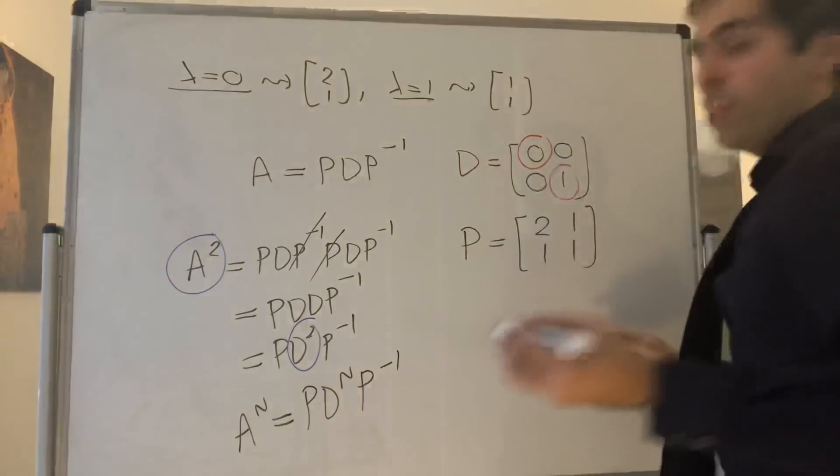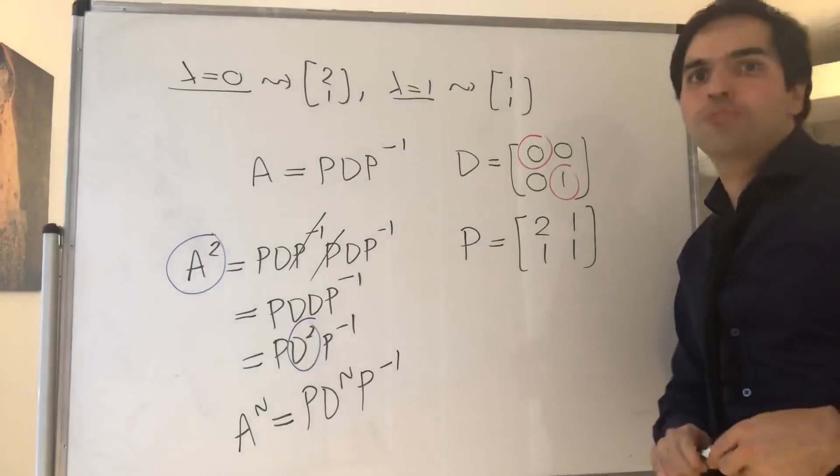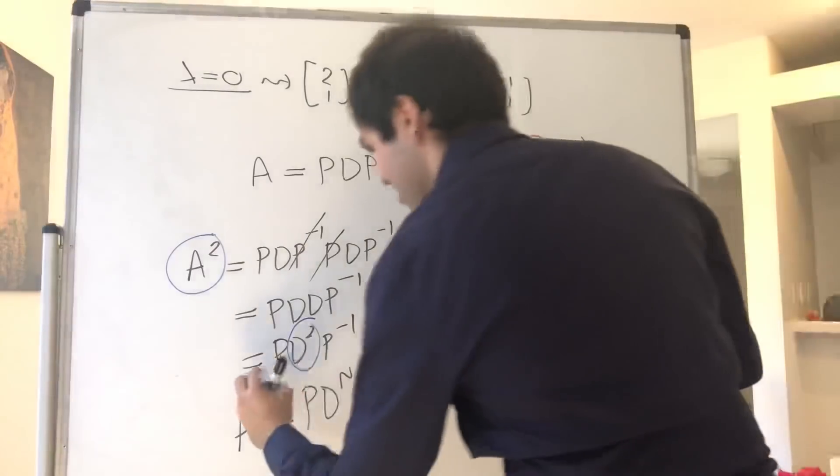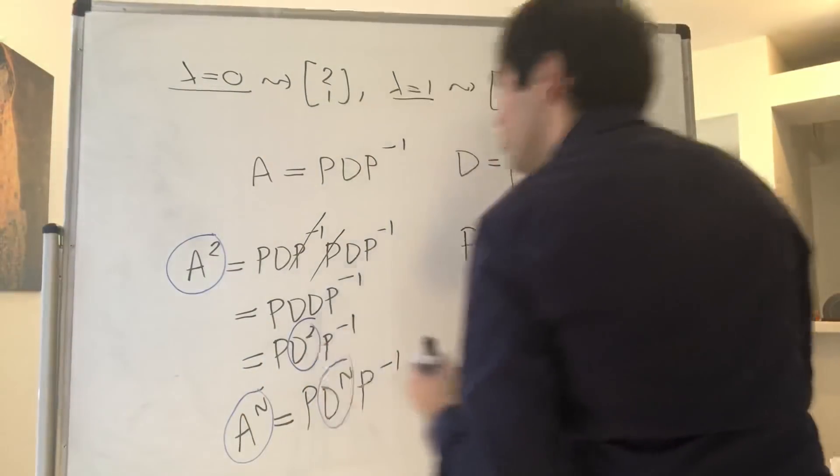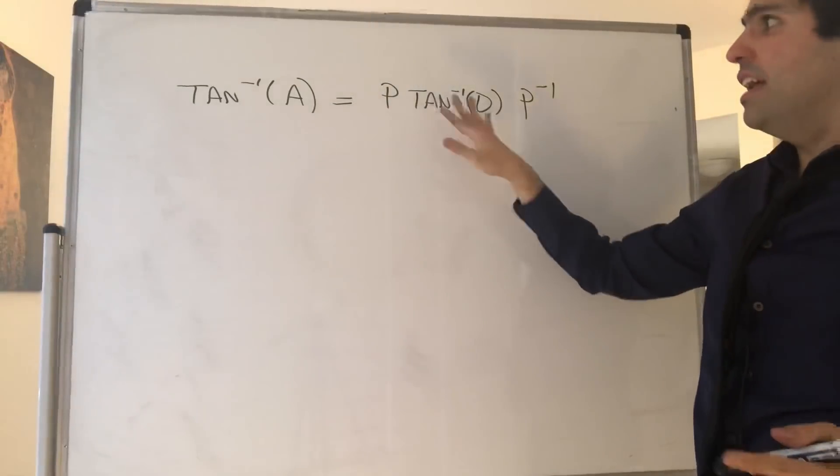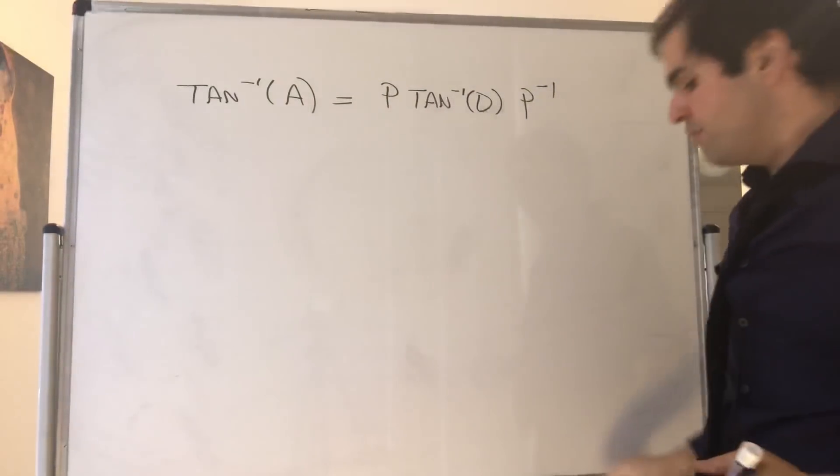Well, and therefore it's true for powers, but that doesn't stop us from doing it for any other kind of weird functions, like arctangent. So in particular, what do we get? And therefore, arctangent of A is just P arctangent of D P inverse.